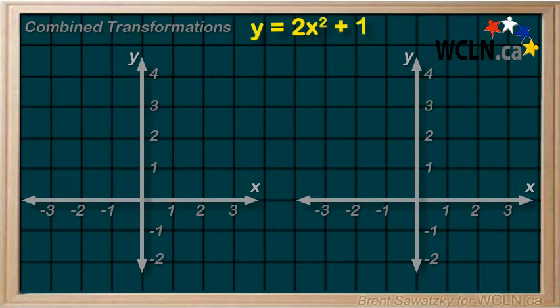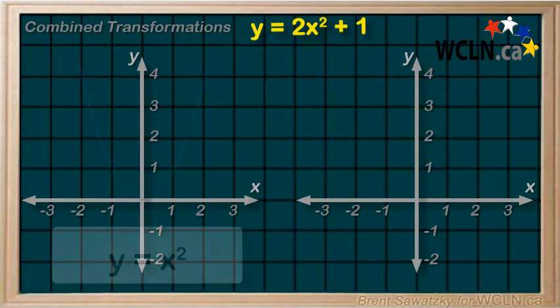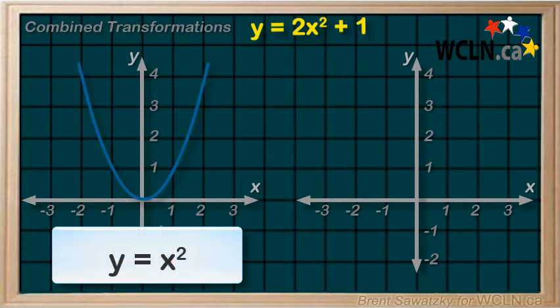In our first attempt here, we'll start by doing the vertical expansion first, and then we'll do the vertical translation. So let's start with our base quadratic. And the vertical expansion is by a factor of 2. Thus, each of the y values will be multiplied by 2. So let's establish some points to sort this out.